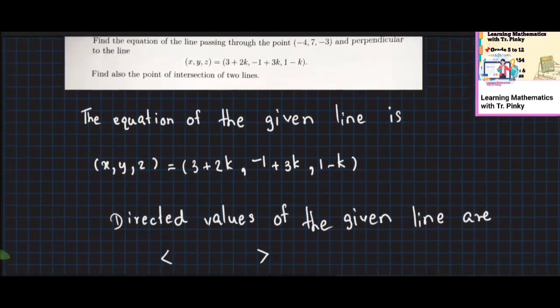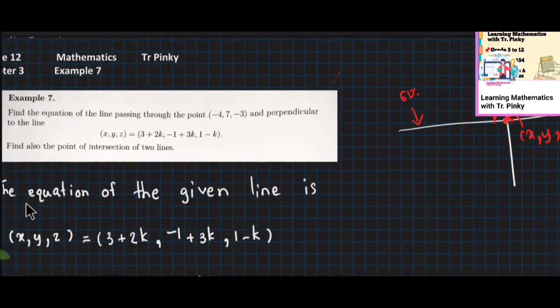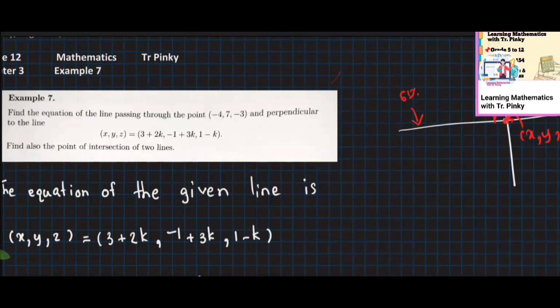So the equation of the given line is given. Given line equals x. We will write x, y, z equals x1 plus kn — that is, 1 plus Kn, 1 plus Kn, 1 plus Kn.